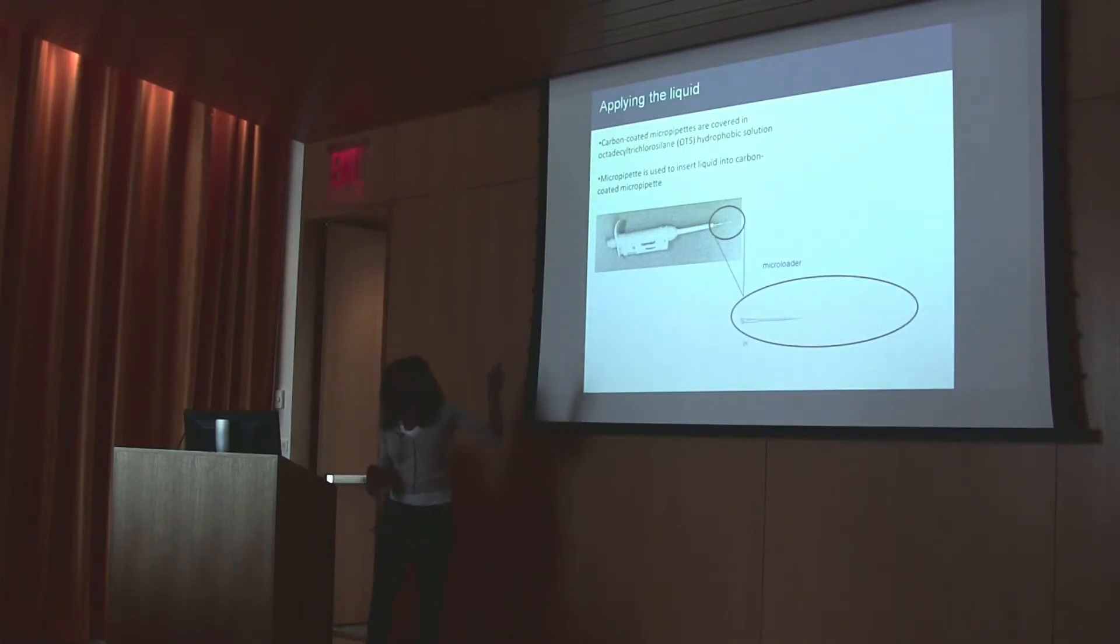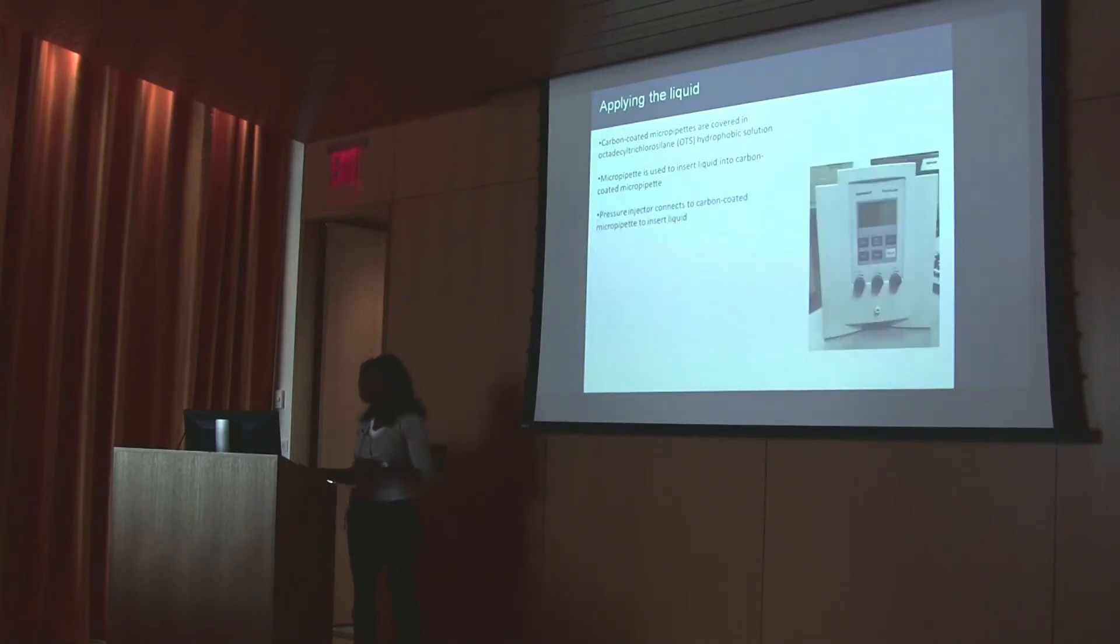This right here is also a pipette. We used this to inject the liquid into the carbon-coated micropipette. We attached this micro-loader onto it, and the tip is very tiny in diameter. It was inserted into the back of the carbon-coated micropipette. Once the liquid was in it, we connected the carbon-coated micropipette to a pressure injector, which then injected a pressure that helped the liquid to be released from the carbon-coated micropipette.